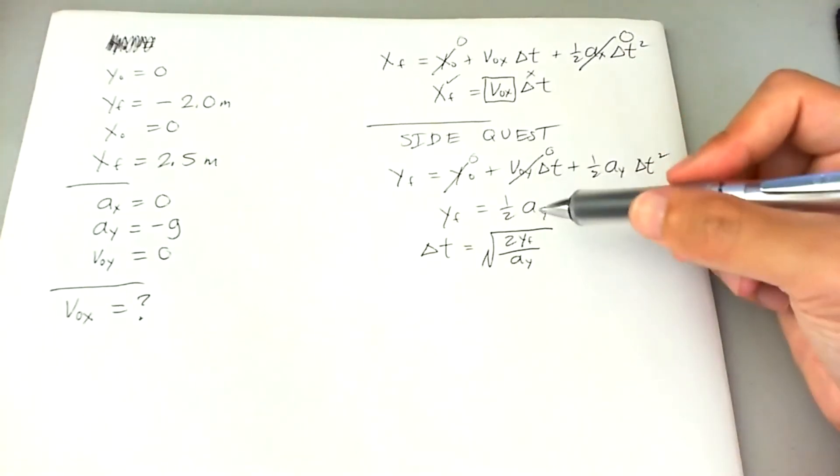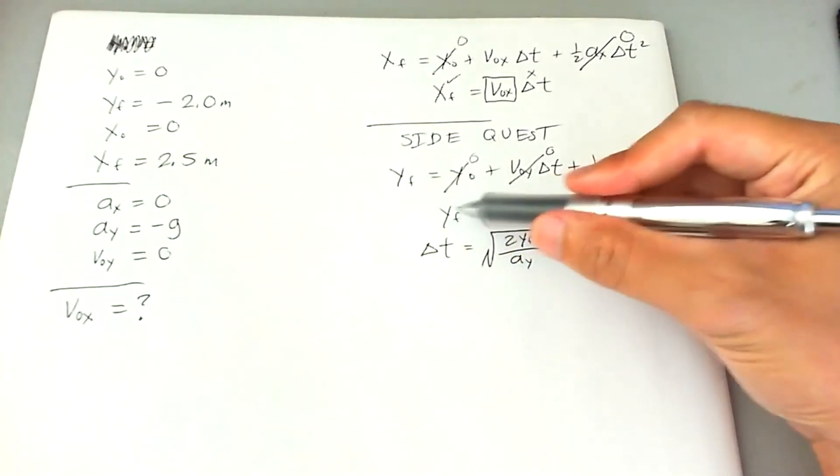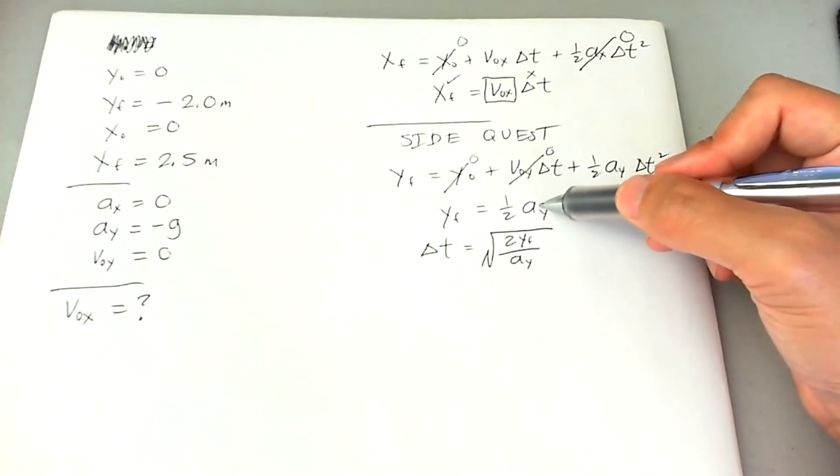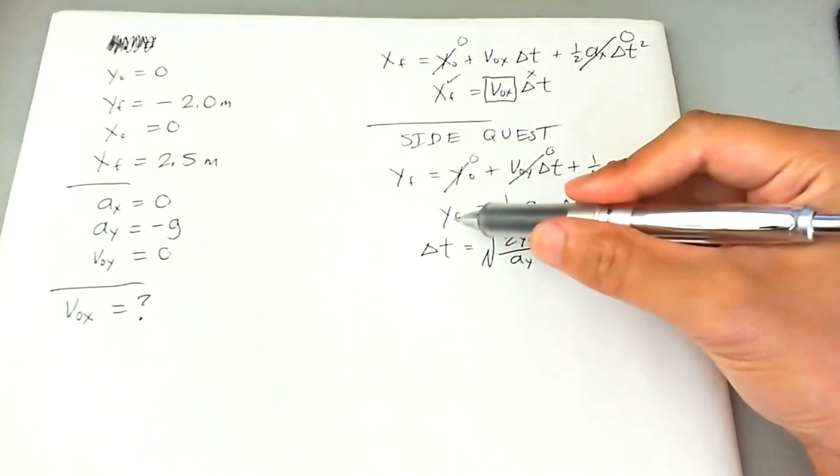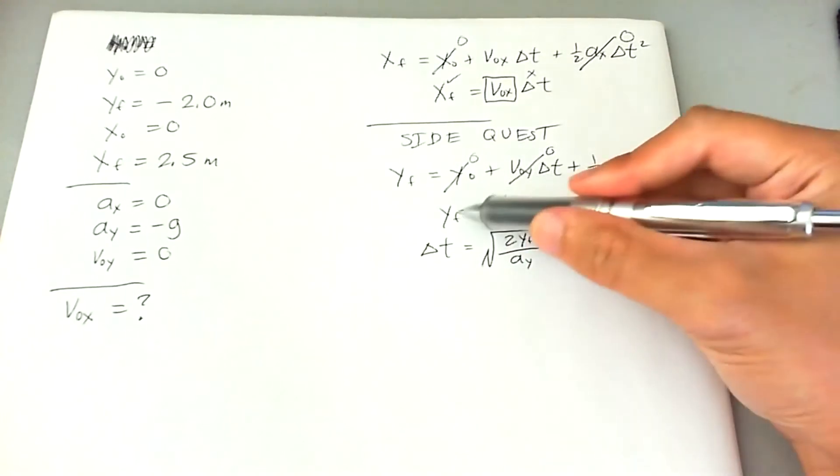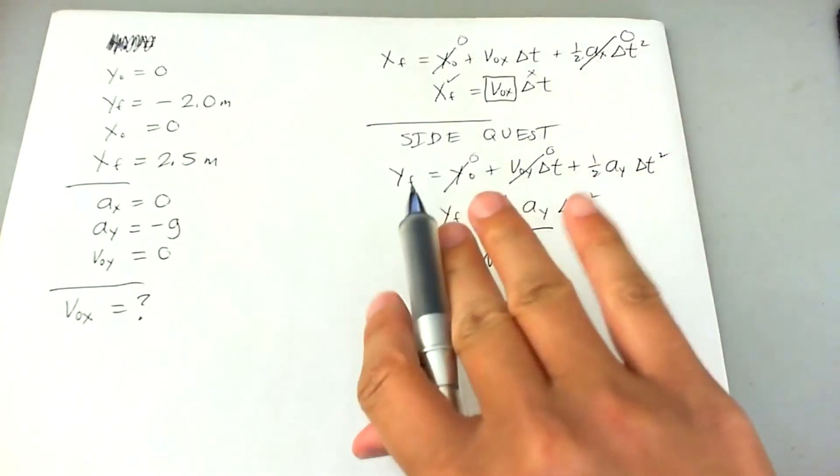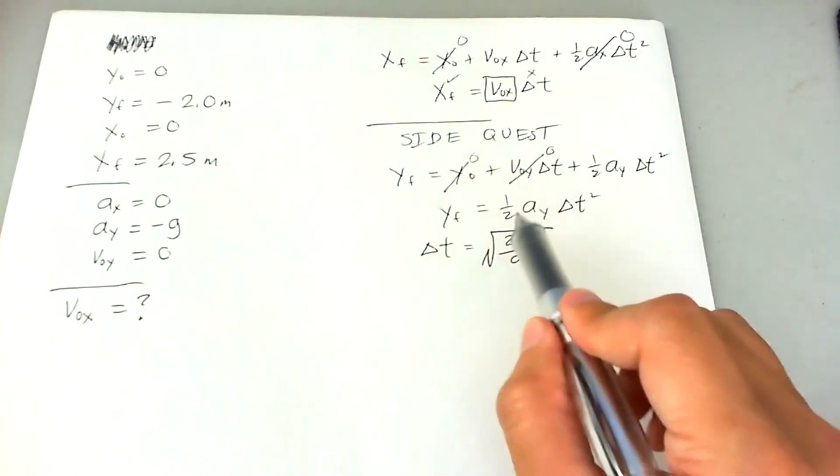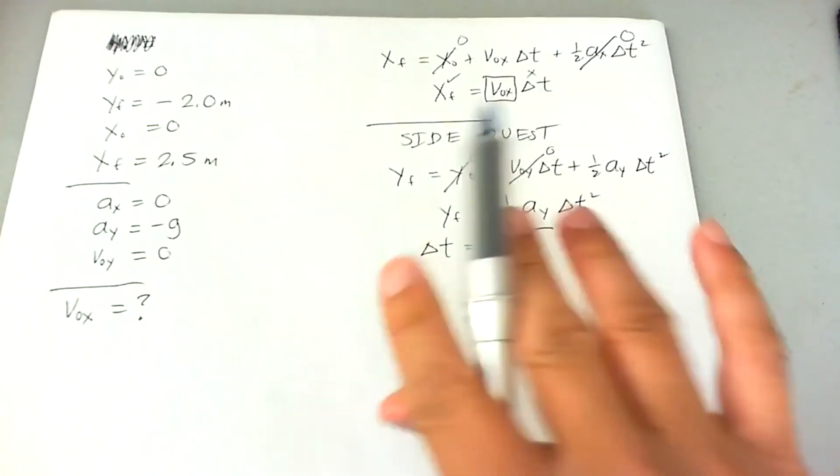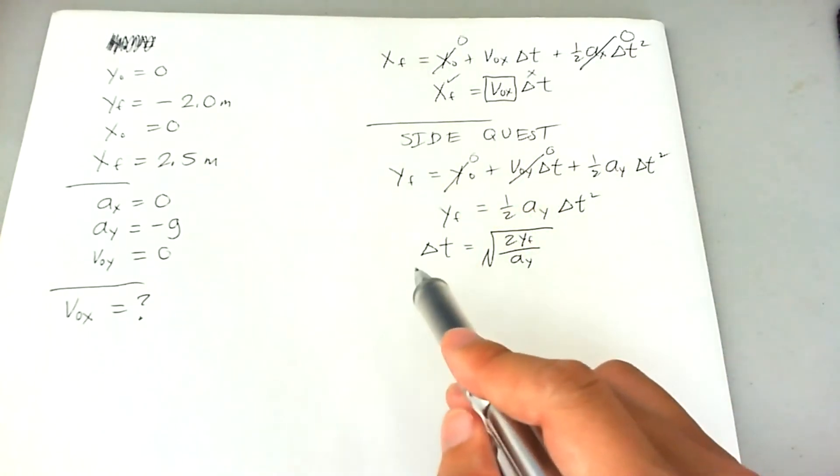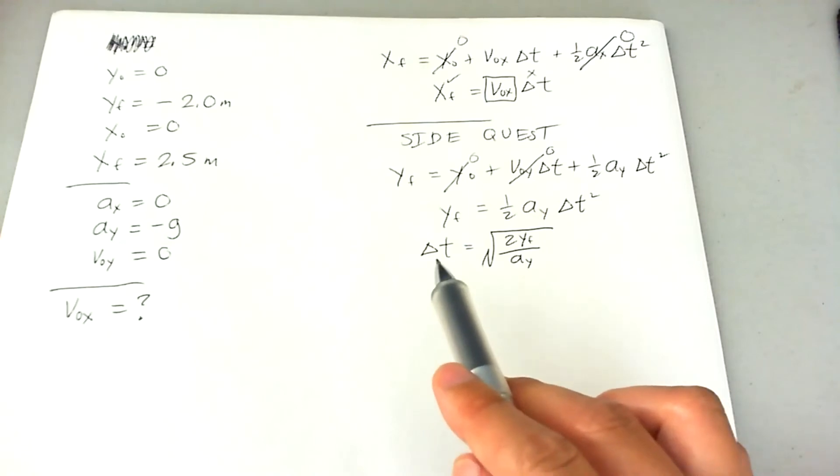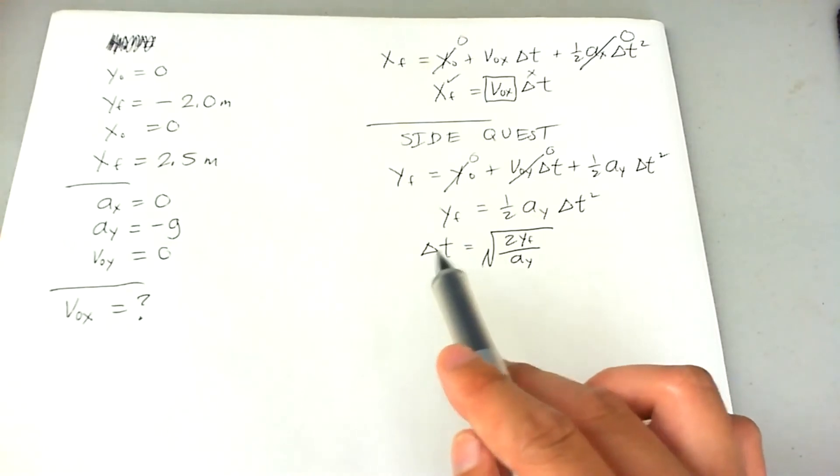So delta T is going to be the square root of 2Y final divided by A Y. And this just happens because I multiply both sides by two, and then I divide both sides by A sub Y. And then I take the square root of both sides. I just flipped it around to make T to the left. It's just because I feel more comfortable solving something that's to the left for some reason.